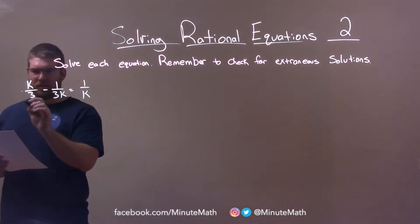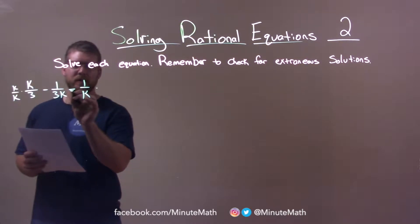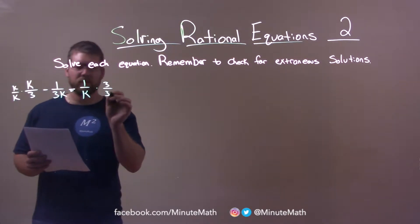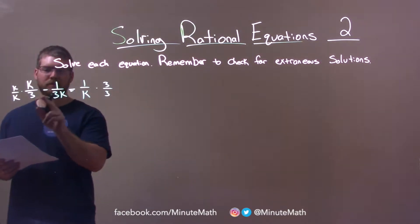So, to do that, this first part should be multiplied by k over k, and the last part here multiplied by 3 over 3. So, let's bring this together. This denominator here shares k times 3, or 3k.